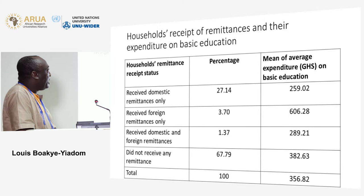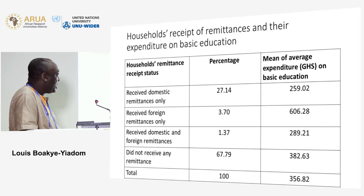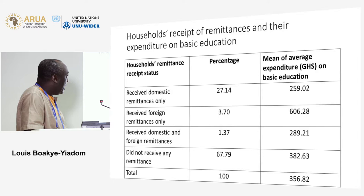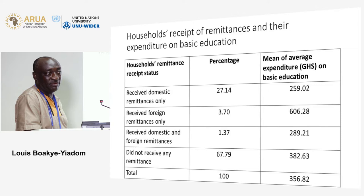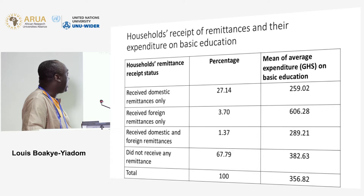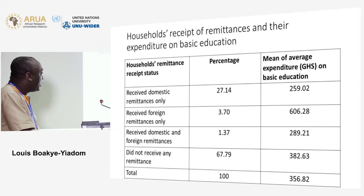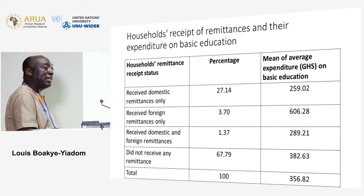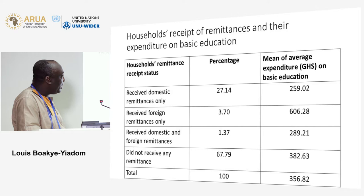Regarding the receipt of remittances and expenditure on basic education, some relevant descriptive statistics are shown on this slide. There are various ways of categorizing households in terms of their remittance receipt status. We find it useful to look at four categories: households that receive domestic remittances only, those that receive international remittances only, those that receive both forms, and finally households who do not receive any remittances at all.